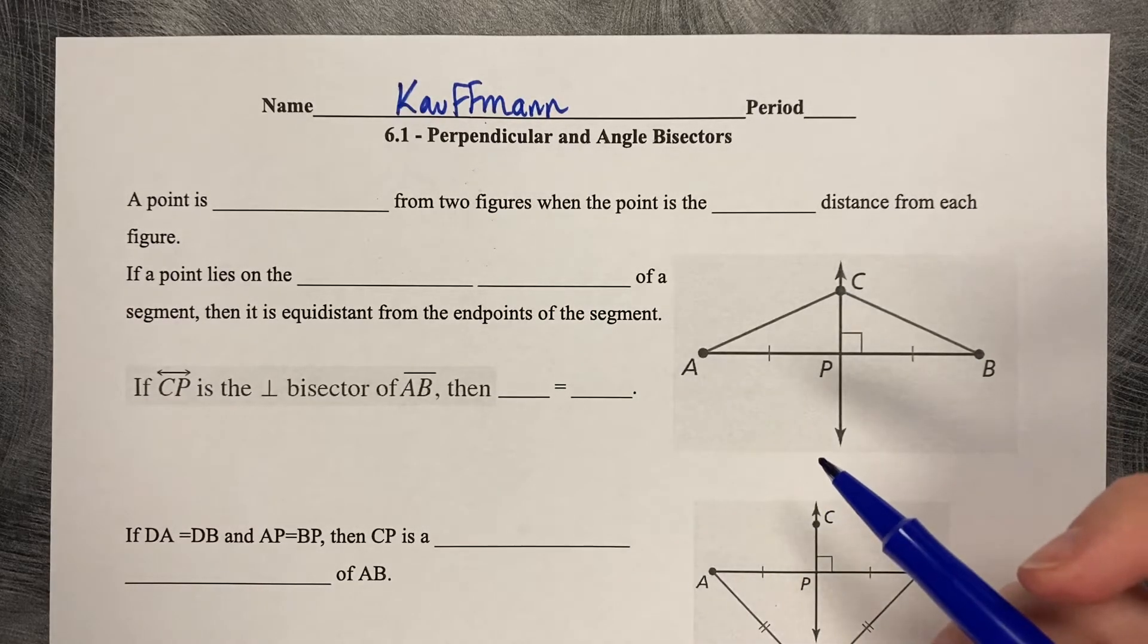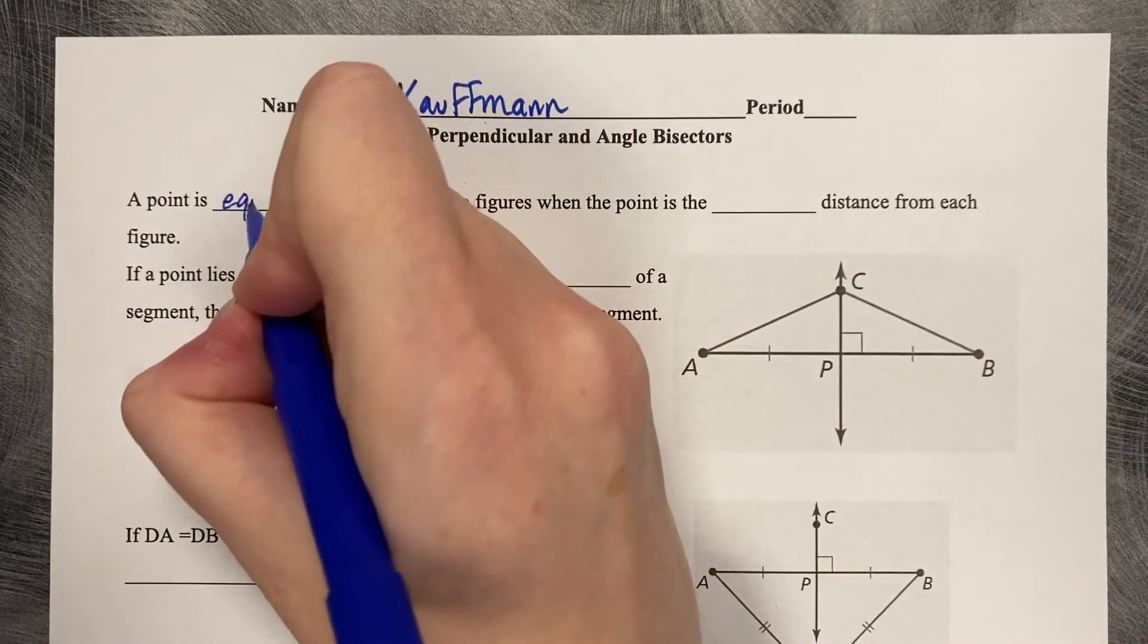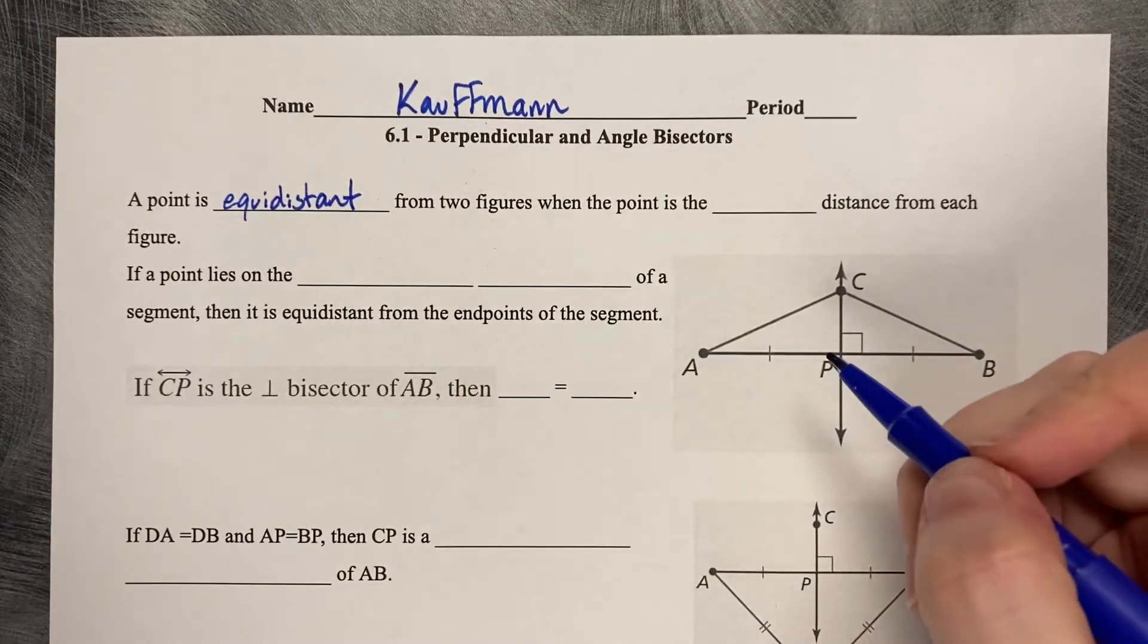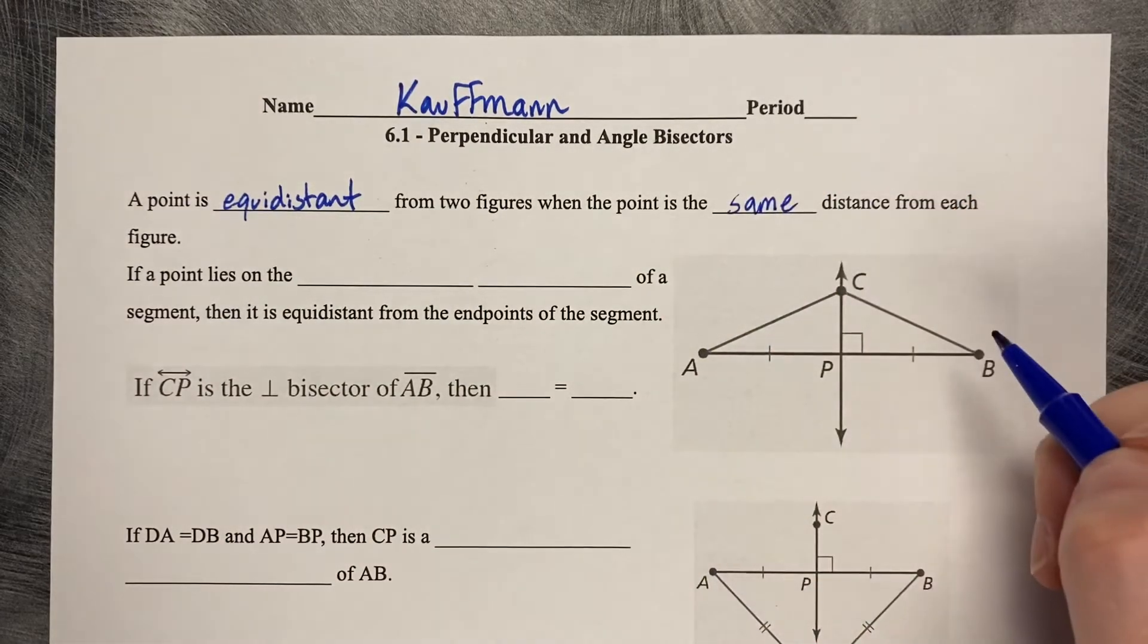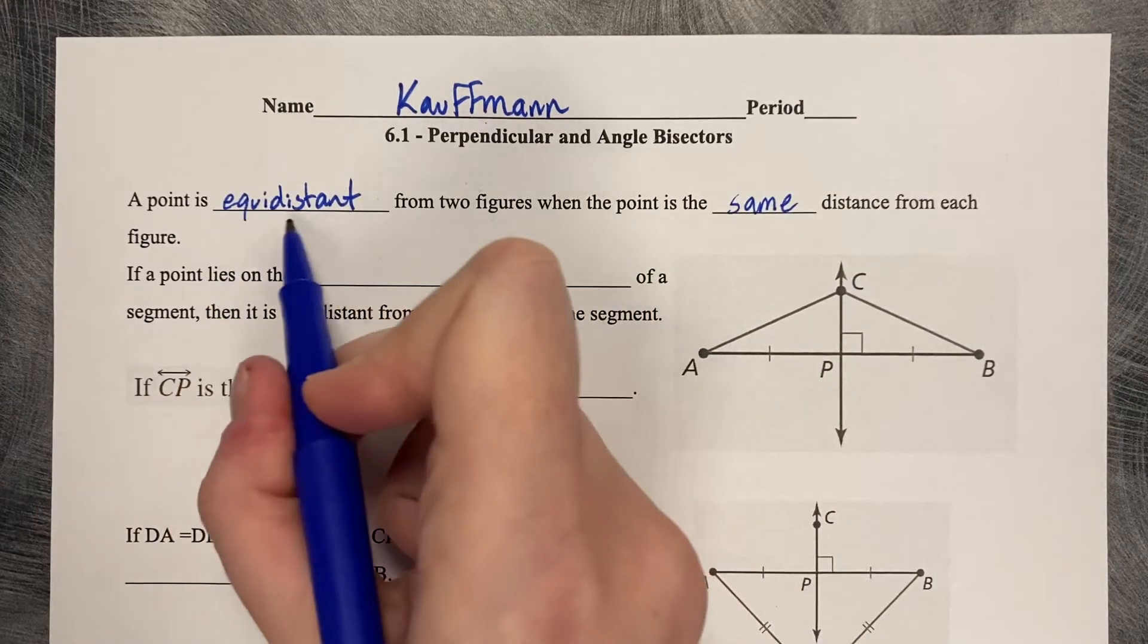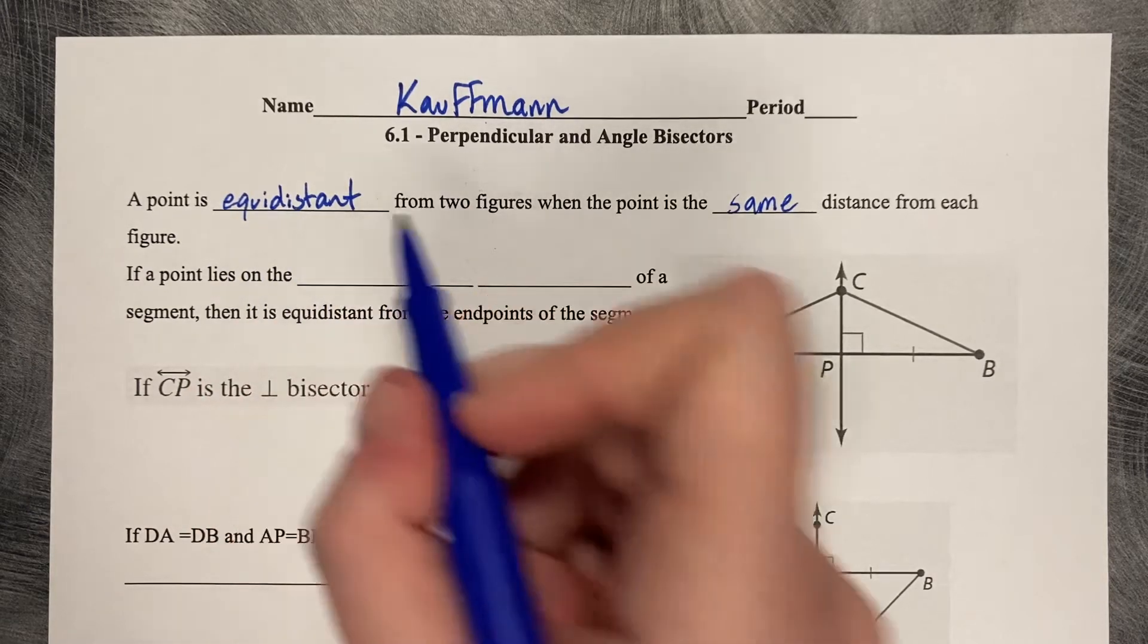6.1 Perpendicular and Angle Bisectors. A point is equidistant from two figures when the point is the same distance from each figure. Equidistant means equal distance or the same distance, with equa standing for equal and distant standing for distance.